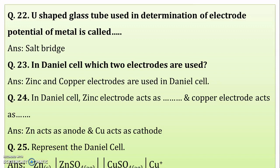The U-shaped glass tube used in the determination of electrode potential of a metal is called a salt bridge. This is related to experiment number 7, the determination of electrode potential of iron. The role of the salt bridge is to transfer ions from one half-cell to the other.